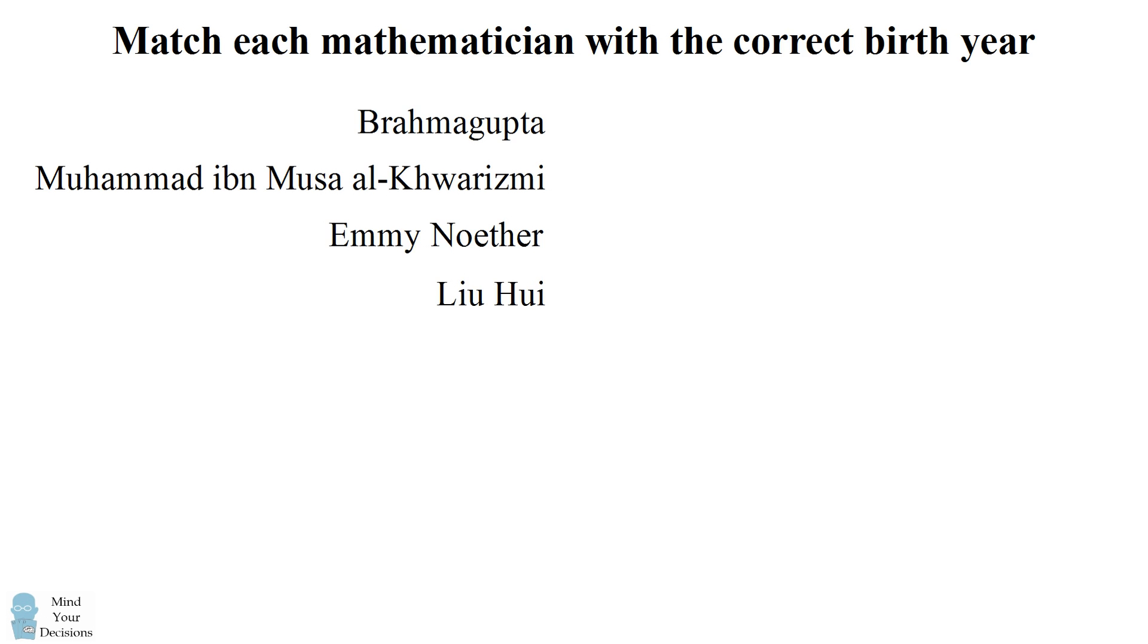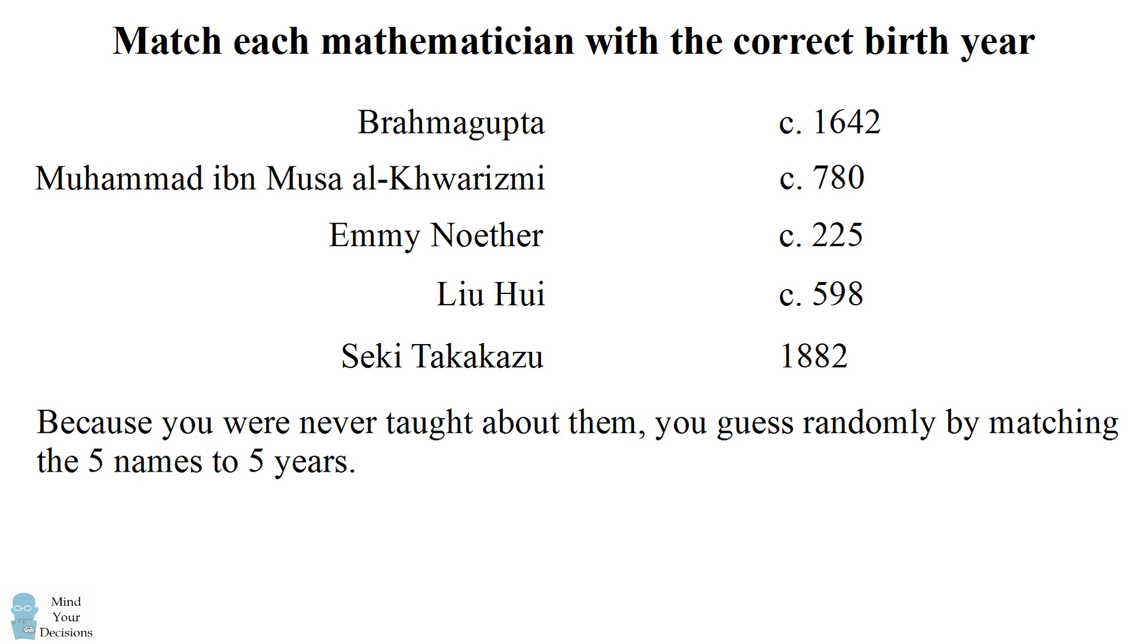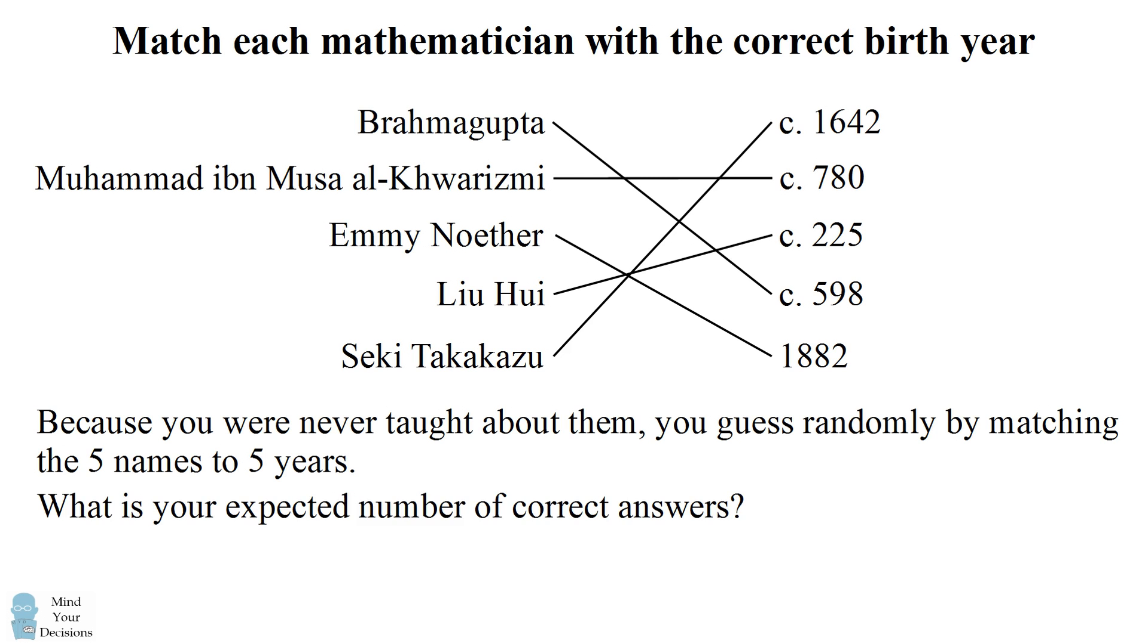Hey, this is Presh Talker. You are given a test where you have to match each mathematician to that mathematician's correct birth year. But because you were never taught about these mathematicians, you guess randomly by matching the five names to five years. The question is, what is your expected number of correct answers?